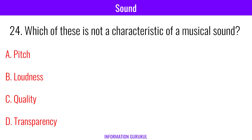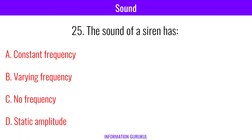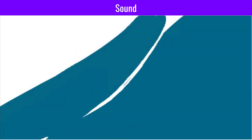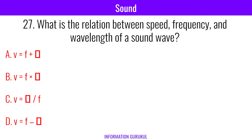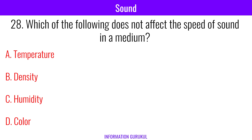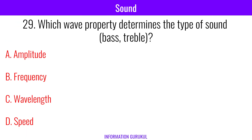Which of these is not a characteristic of a musical sound? Transparency. The sound of a siren has varying frequency. Which part of the human ear converts sound vibrations into electrical signals? Cochlea. Which of the following does not affect the speed of sound in a medium? Color. Which wave property determines the type of sound? Frequency.